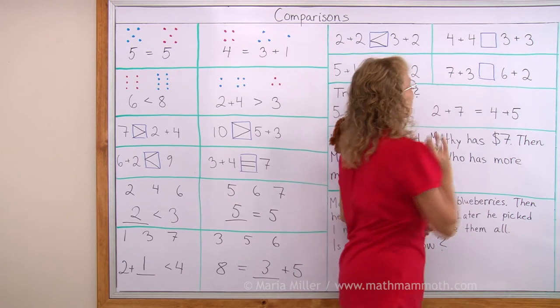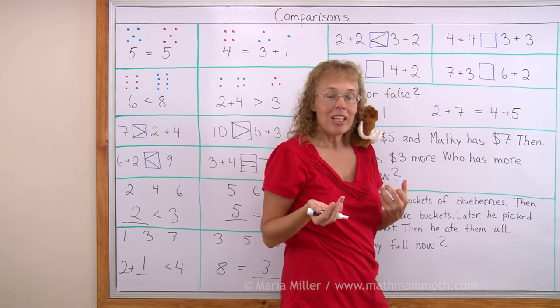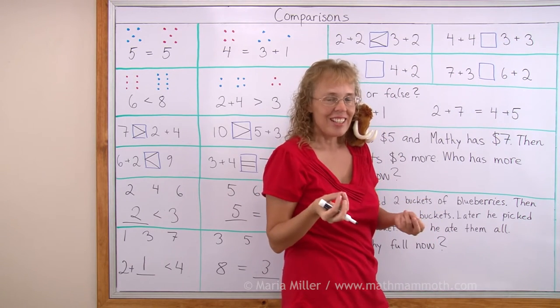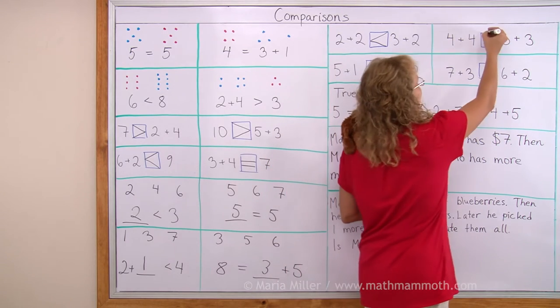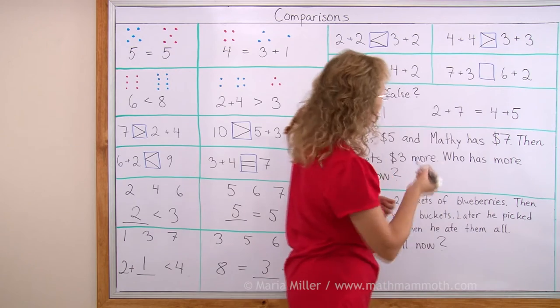4 and 4 on this side and 3 and 3 on that side. Which one will be more? You don't actually have to add. 4 and 4 will surely be more than 3 and 3. So 4 plus 4 is greater than 3 plus 3.